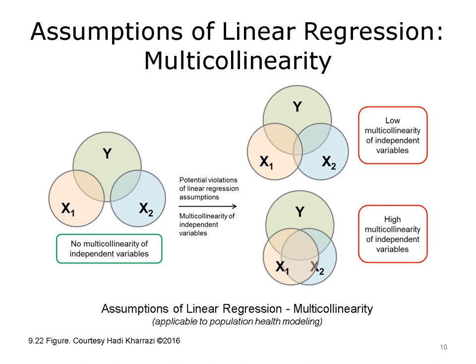There should be minimal multicollinearity of independent variables if linear regression is used for population health modeling. For example, if a population health model is using two Xs — X1 and X2 — to predict Y, then these Xs should not be highly correlated, especially when predicting Y. If the two Xs do not have multicollinearity, the model will perform stably. However, if the model has partial or high multicollinearity among its independent variables, then the model will face issues.